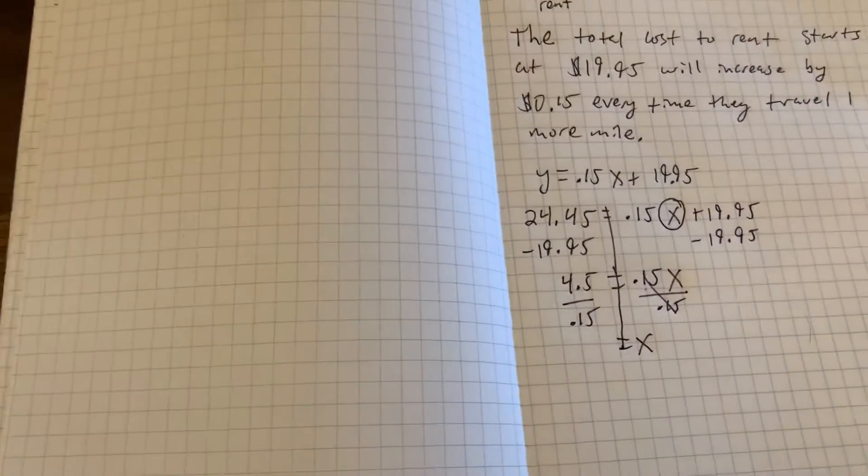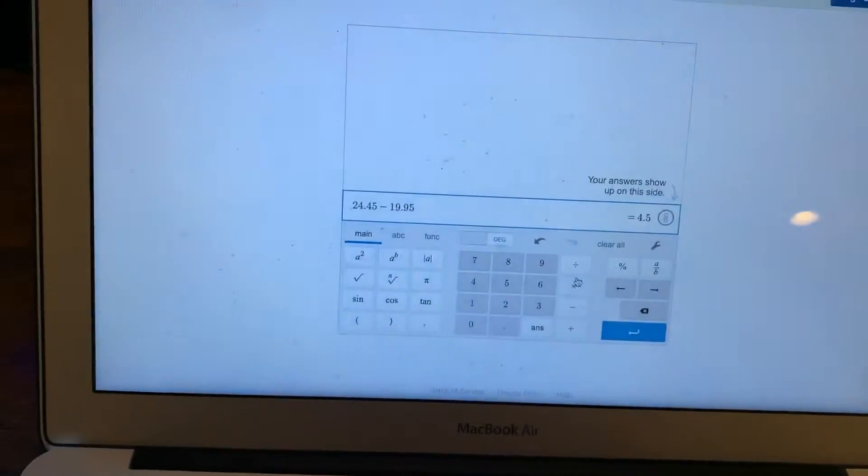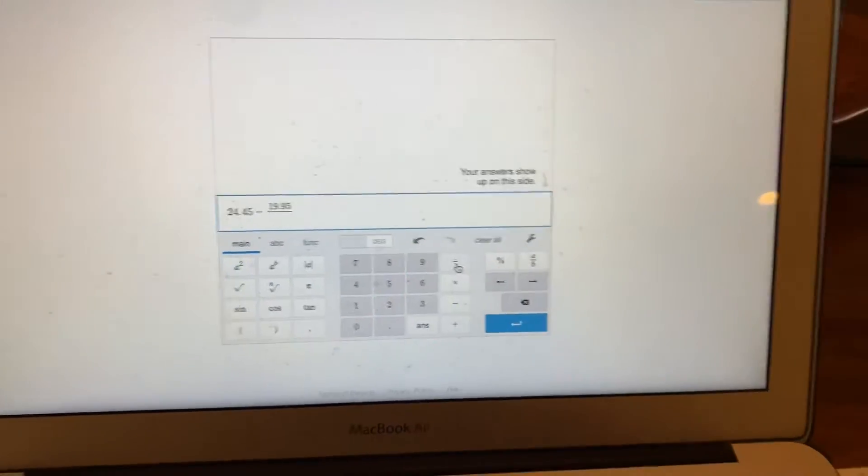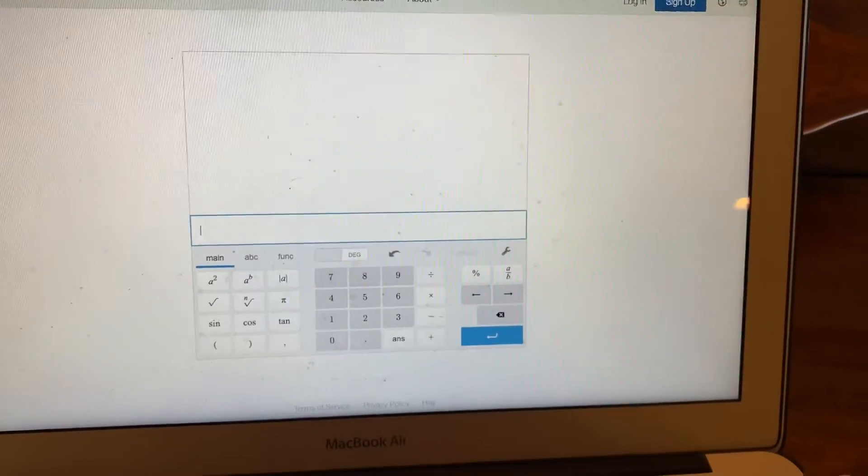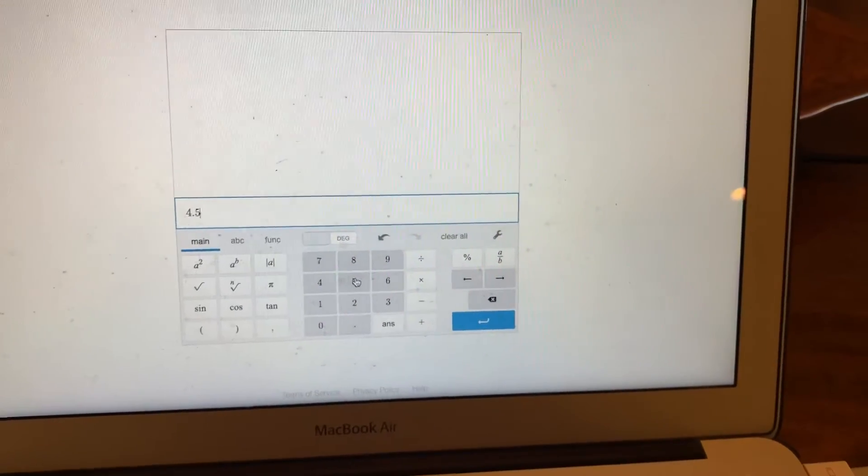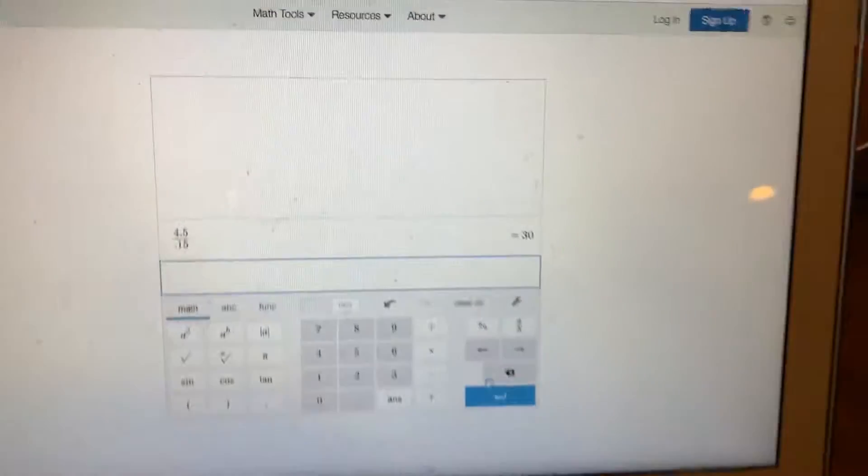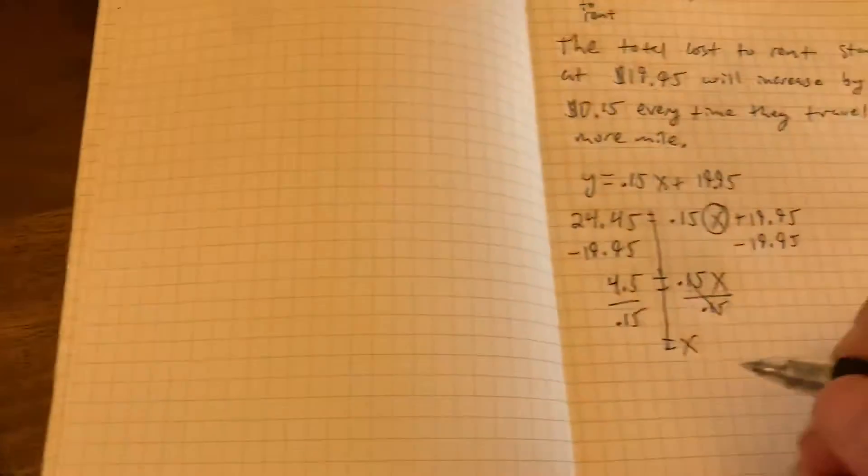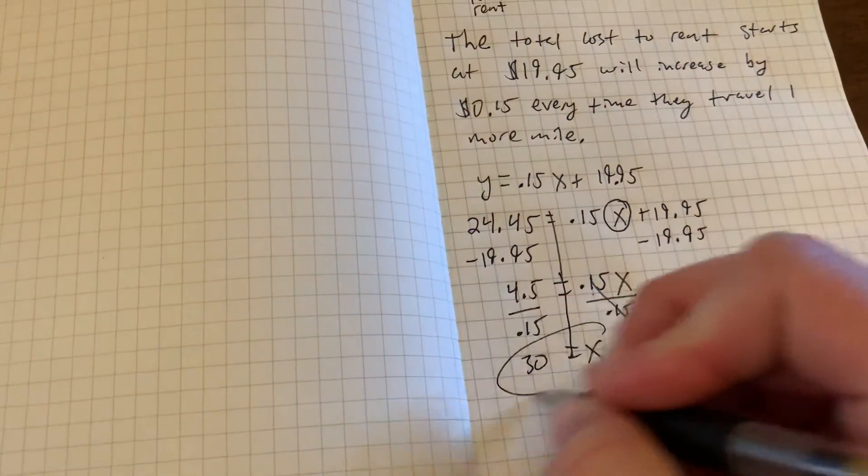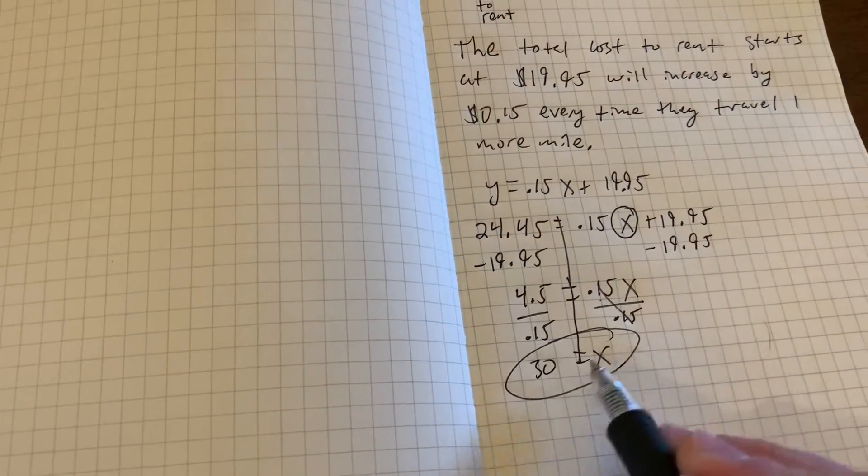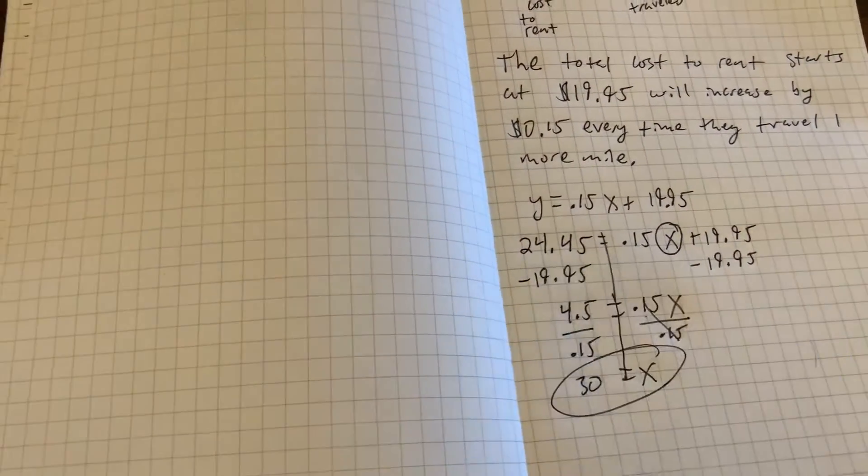And 4.5 divided by 0.15, I'll now go over here. So we will take that 4.5, divide it by 0.15, and we end up getting 30 there. So the answer was 30. They drove 30 miles if they were charged $24.45.